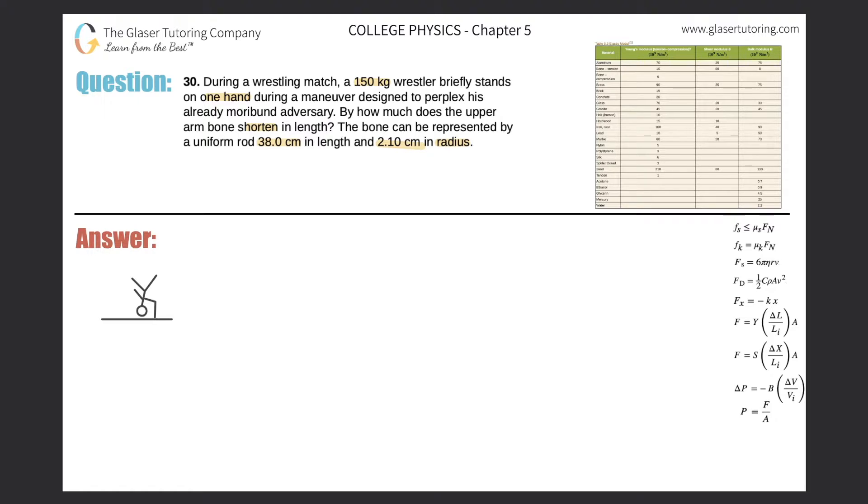And we know that his mass is 150 kilograms. So why don't we just calculate his weight right away, just because we know that we'll be dealing with forces here. So 150 multiplied by 9.8. So his weight will simply be 150 times 9.8, and it's going to be 1470. So 1470 newtons. Okay, great.